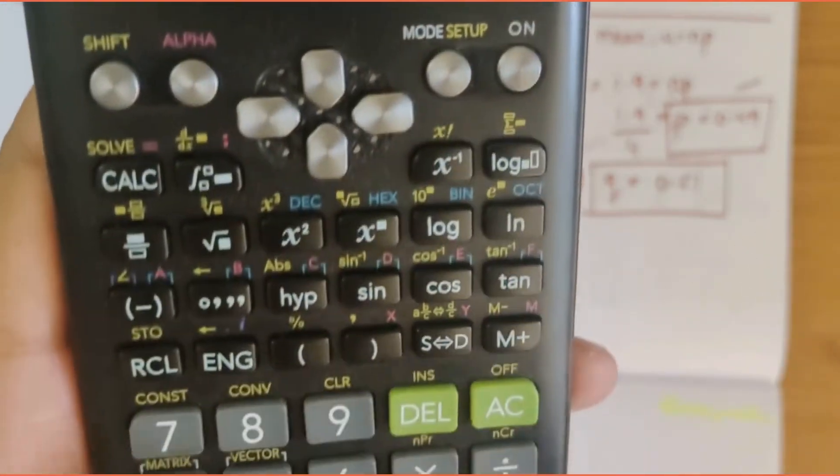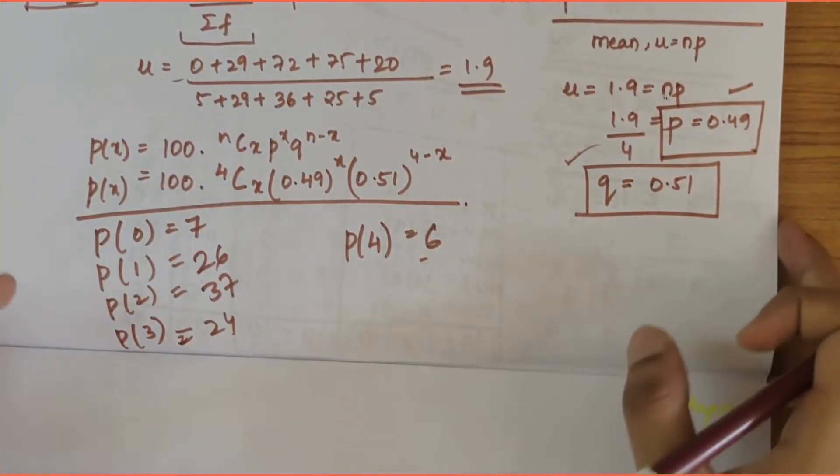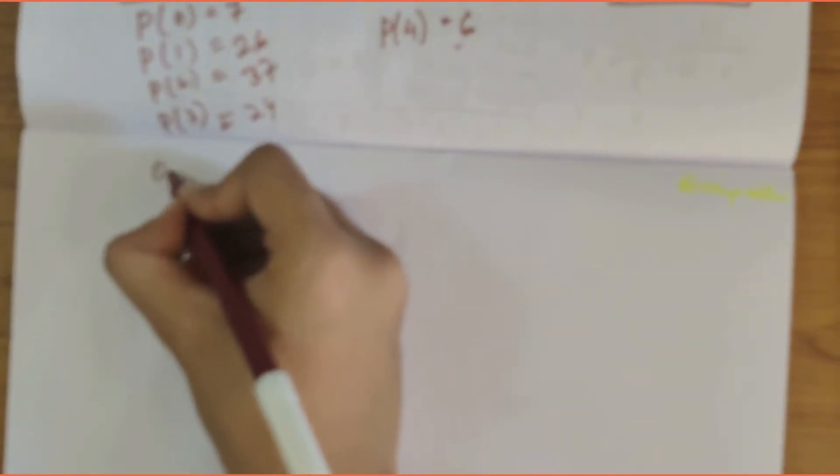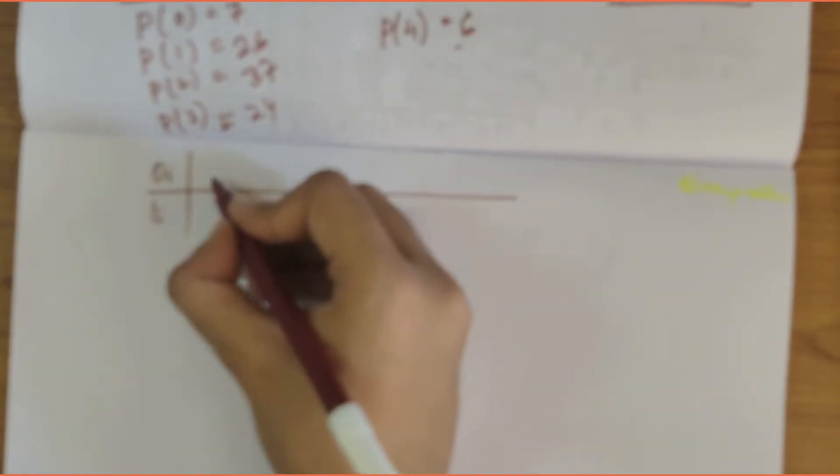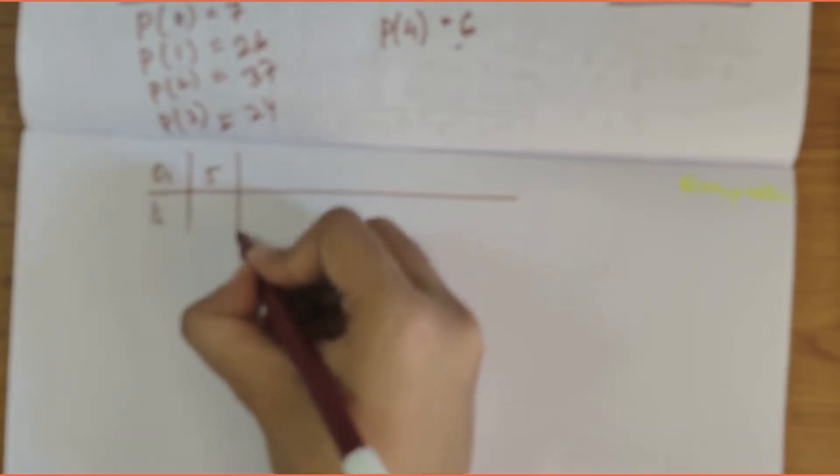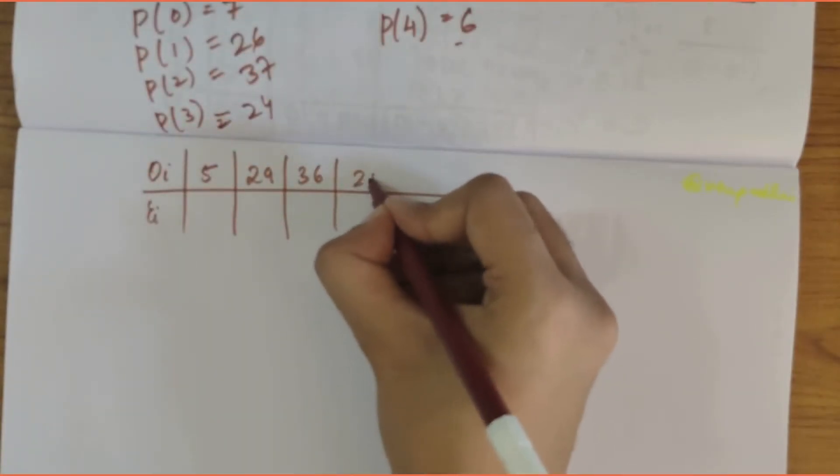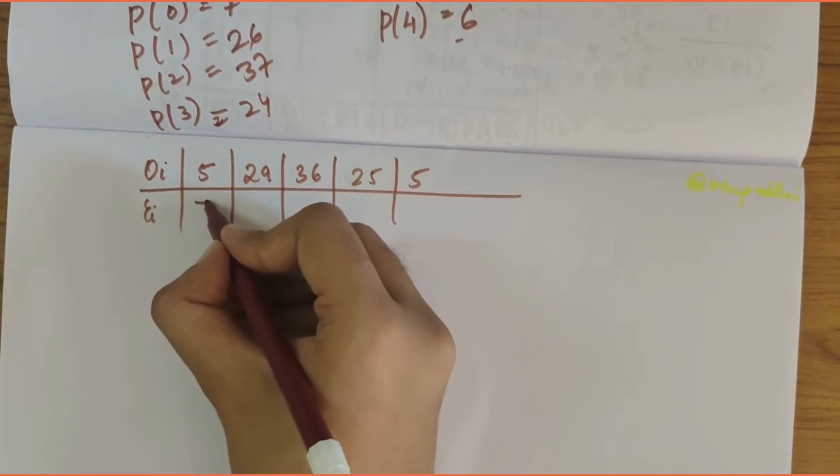We have found out all the binomial distribution values very easily by putting the equation in the calculator. Now let's proceed with formulating a table. Here is oi and here ei. Let's write the oi values, that is observed frequency values which we got in the question: 5, 29, 36, 25, and 5. Here ei values would be 7, 26, 37, 24, and 6.